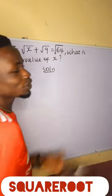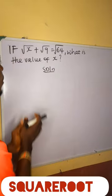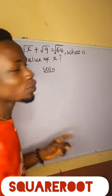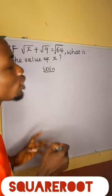Hello guys, welcome back to another section of Onkosam online tutorial. Let us consider this question on the board. If the square root of x plus the square root of 9 equals the square root of 64, what is the value of x?